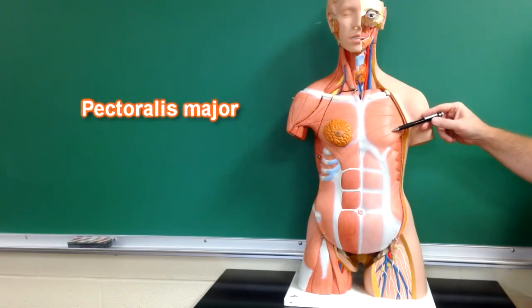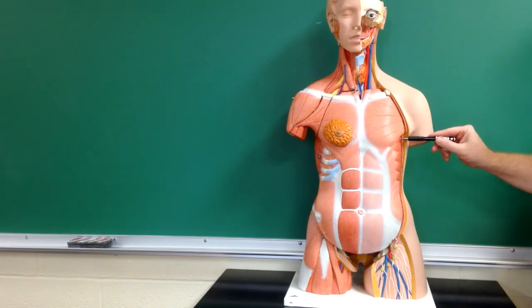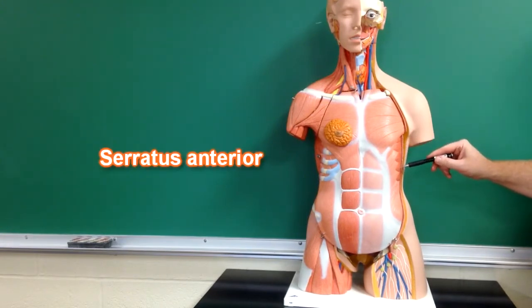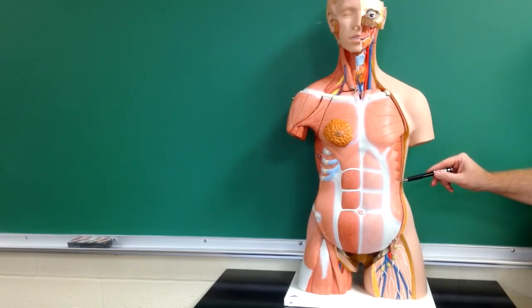This muscle right here is pectoralis major. We can see some of the fibers of serratus anterior over here, and serratus anterior looks like a saw blade on the front. That's where it gets its name from.